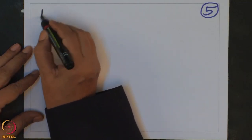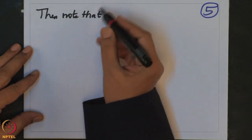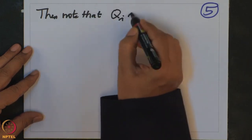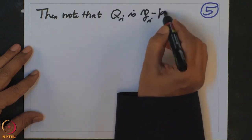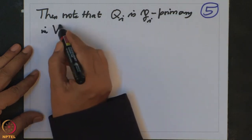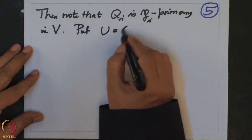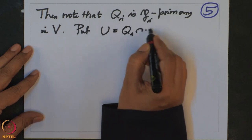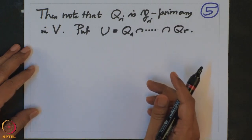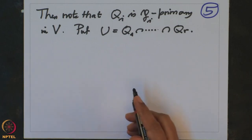Note that Q_i is P_i-primary in V. Now put U equal to the intersection of Q_1 through Q_R, and what we want to prove is that this U equals 0.